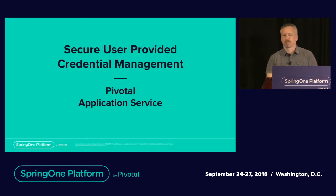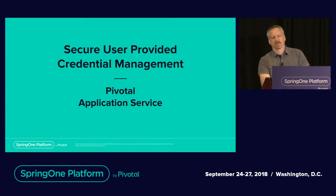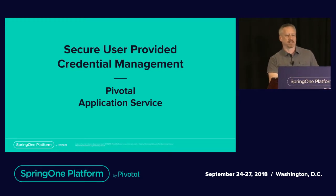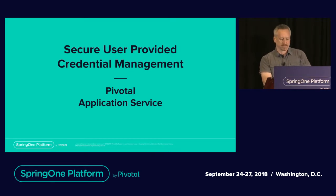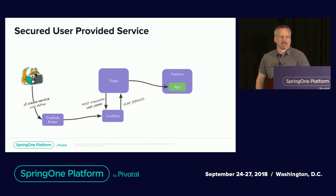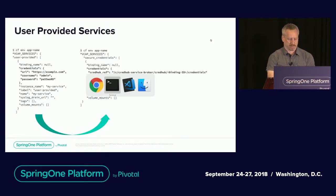The last thing we'll touch on is user-provided service instances. This use case is where you have applications running on the platform that need to get to some service not managed by a service broker — maybe an Oracle database running outside Cloud Foundry, or some web service on the public internet. You want to provide credentials for services like that to your apps securely. You can do that now with a CredHub service broker — a way to call CredHub and ask it to store a set of credentials, then bind that service to your application so it looks to the application like a managed service instance.